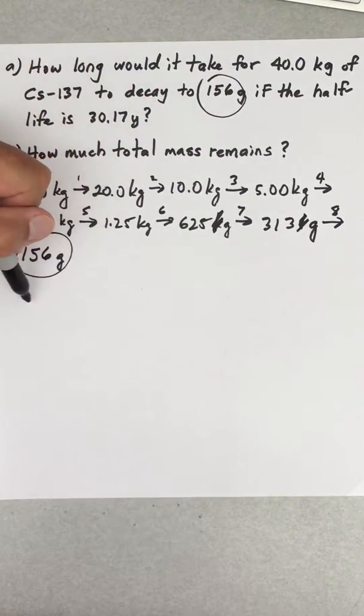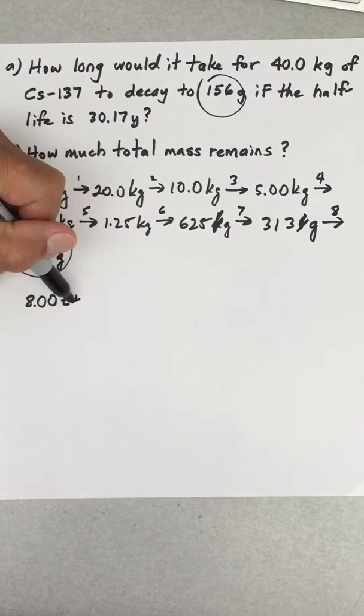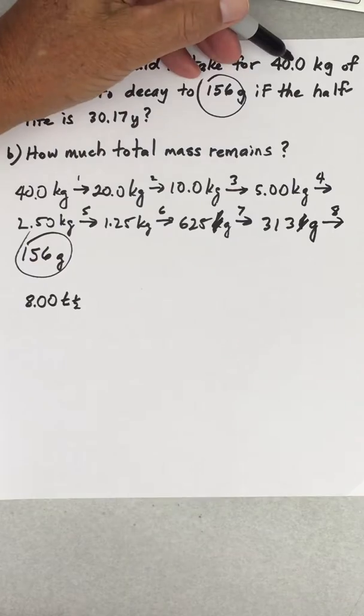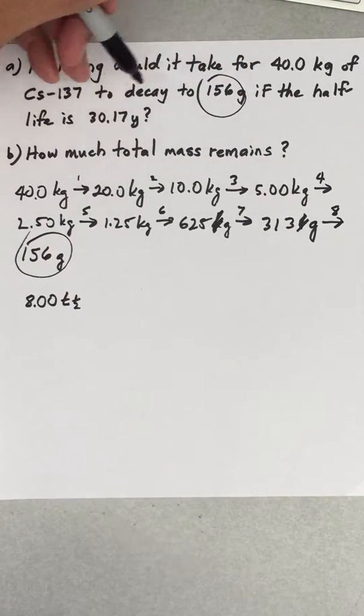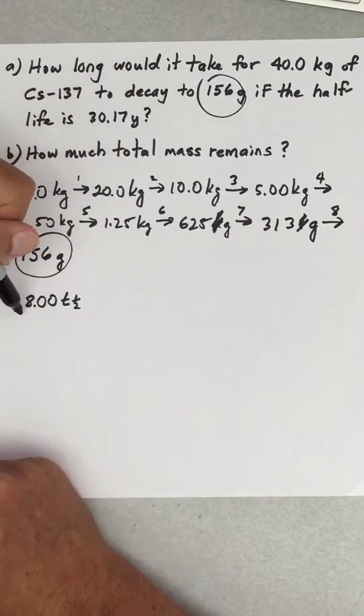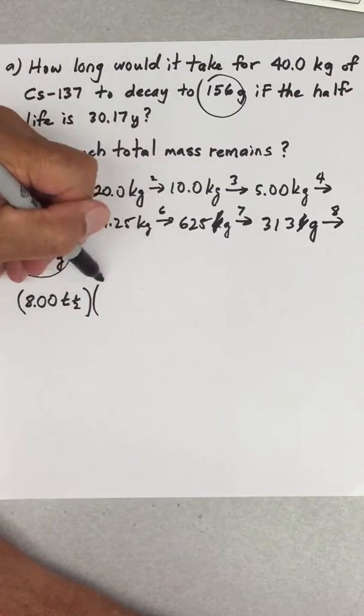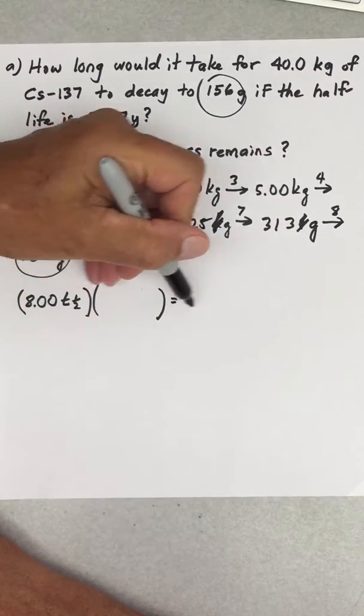It took eight half-lives. I'm going to use three significant figures because I started off with three significant figures. I ended up with four here, so I'm just going to use three. So we took eight half-lives to get to our target mass, but I want to convert half-life into years.